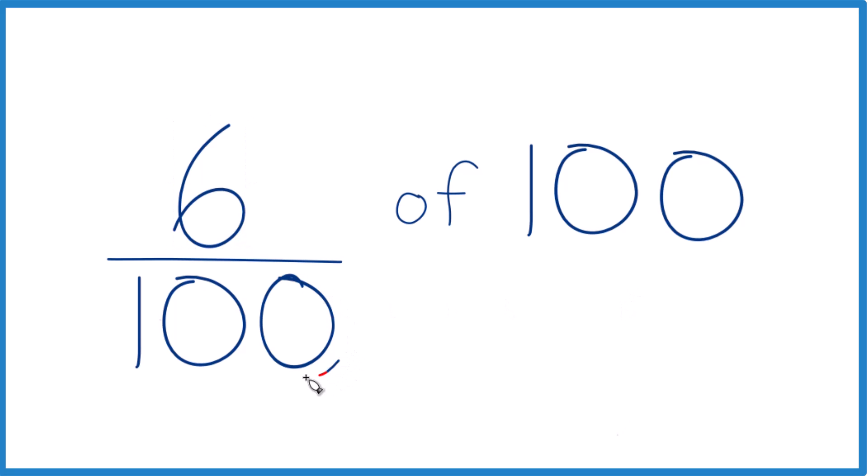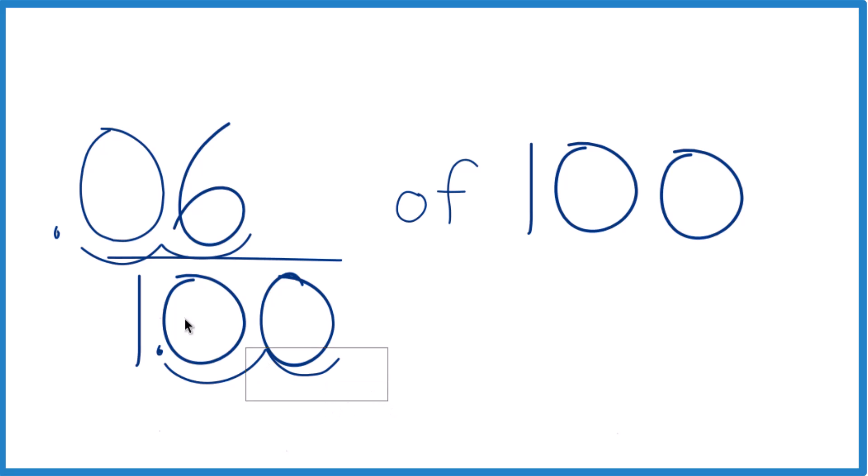So let's move our decimal place 1, 2. So now we just have 1 and over here 1, 2. Put a placeholder 0 in there. And now it's just 0.06 over 1. Divide by 1, it's the same thing, 0.06. So we can get rid of all this.